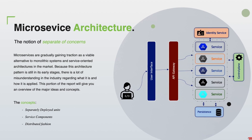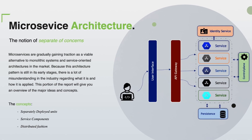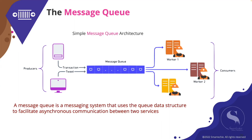A message queue is a messaging destination that uses the queue data structure to facilitate asynchronous communication between two services. They are commonly used in serverless and microservice architecture design patterns.